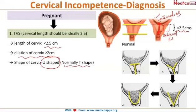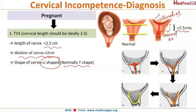On transvaginal ultrasound, the normal T-shape of the cervix is seen when the internal os is closed. If the internal os starts dilating, the shape of the cervix becomes Y-shaped, and as it dilates further, it becomes V-shaped. With dilatation of more than 2 cm, the cervix becomes U-shaped, which is suggestive of cervical incompetence.